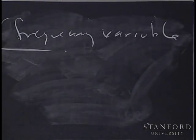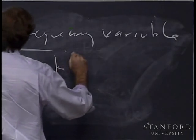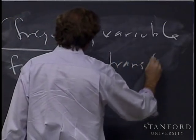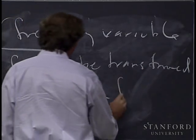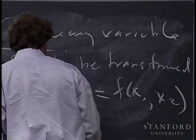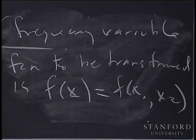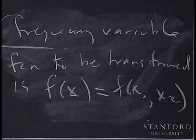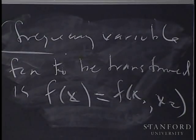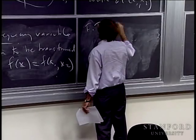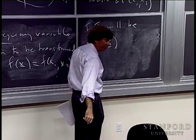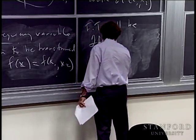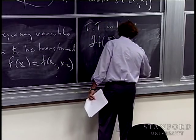The function to be transformed is not a function of one variable alone, but a function of the vector variable x, or f(x1, x2). The Fourier transform is likewise going to be a function of the frequency variable, the pair ξ1 and ξ2. I'll use the same notation: the Fourier transform of f at the vector frequency variable ξ, or written out as ξ1, ξ2.